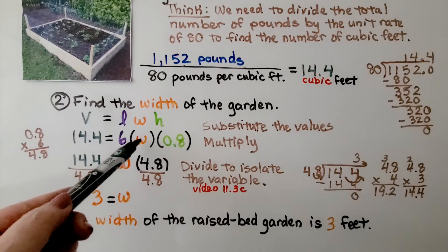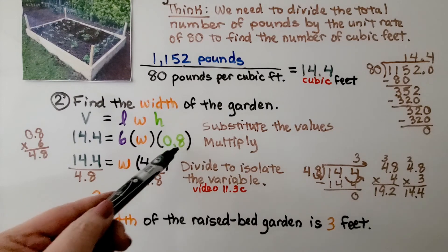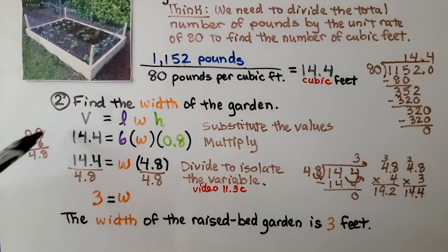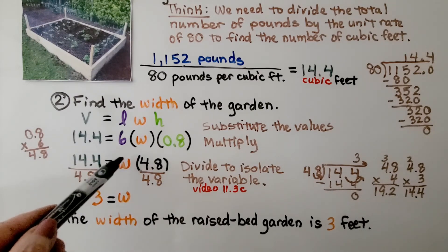We don't know the width, so that's going to stay as a W. We know the height was 8 tenths of a foot. We multiply 6 times 8 tenths. And we get 4.8. So now on this side, we have 4.8. And we still have that unknown width.